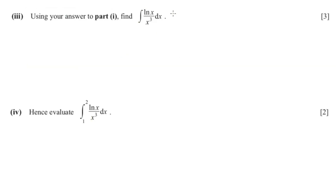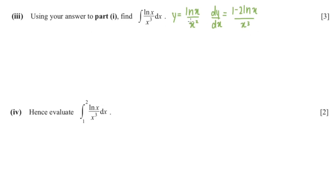For the next question, we know from the previous part that y equals ln(x) over x squared and its derivative is 1 minus 2·ln(x) over x cubed. Since integration and differentiation are inverse functions, integrating 1 minus 2·ln(x) over x cubed should give ln(x) over x squared.